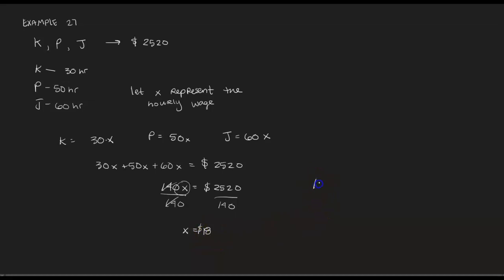Now we can go back and figure out how much each person actually should get paid. So Kai should get paid 30 times 18, or $540. Paulus should get paid 50 times 18, or $900. And then Judy should get 60 times 18, or $1,080. And we could double check our work and add these up to make sure that it gets $2,520 back.